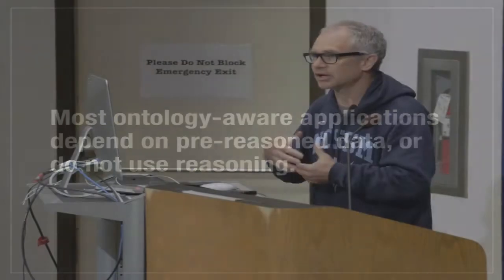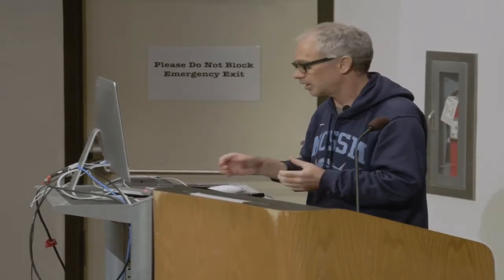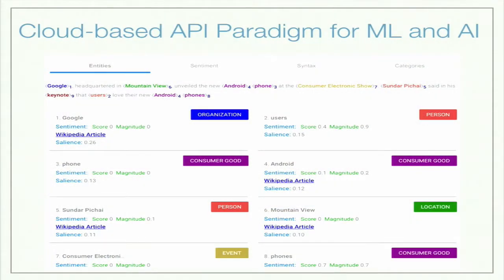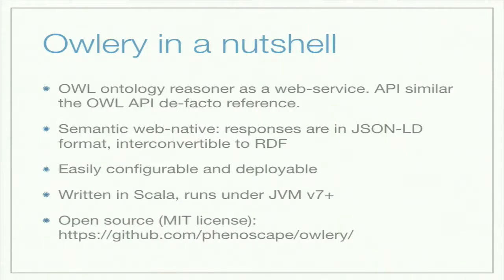That's generally the challenge of integrating a very complex AI or machine learning algorithm into an application — not unique to this domain. The paradigm that has broken through to solve this is the client-server paradigm, where you offload the heavy lifting to a server. For example, sentiment analysis and natural language parsing — there are APIs available in Google and other cloud providers that trim down the effort to integrate to just a few lines of code. That's the paradigm where Olory comes in. In a nutshell, it's an ontology reasoner as a web service with a web service API that is semantic web native — responses come out as JSON-LD, which come together with a JSON-LD context that allows you to convert it easily into RDF.